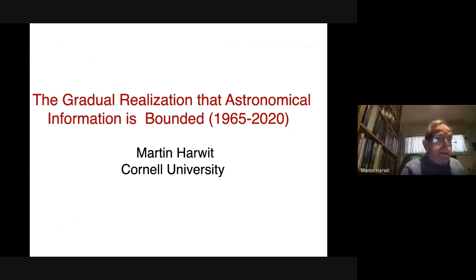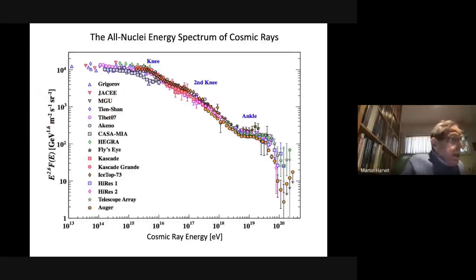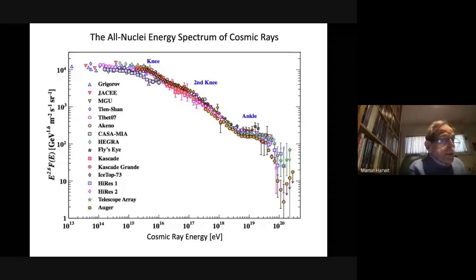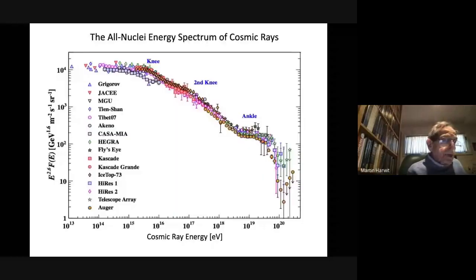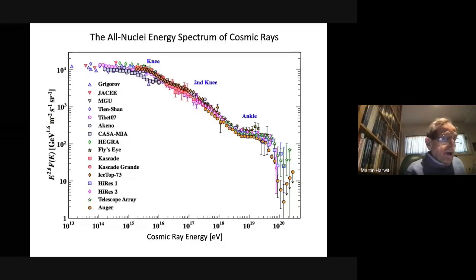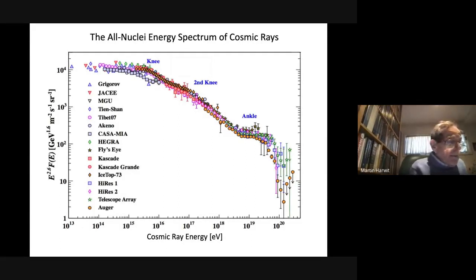The talk is called The Gradual Realization that Astronomical Information is Bounded over the range of 1965 to essentially today. Multi-messenger astronomy, the introduction of neutrino, gravitational wave, and high energy cosmic ray detections, plus an ever-expanding capability of capturing and analyzing electromagnetic waves reaching us from across the universe, has introduced a new level of enthusiasm in astrophysics.